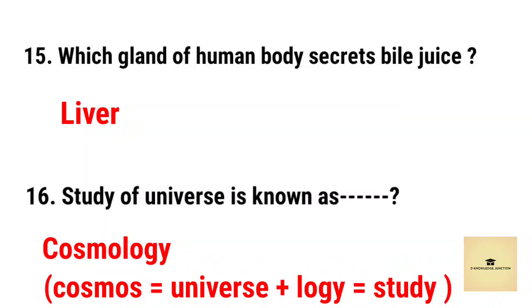Which gland of the human body secretes bile juice? The right answer is liver. Next question: The study of the universe is known as what? The right answer is cosmology. Cosmo means universe and logy means study.